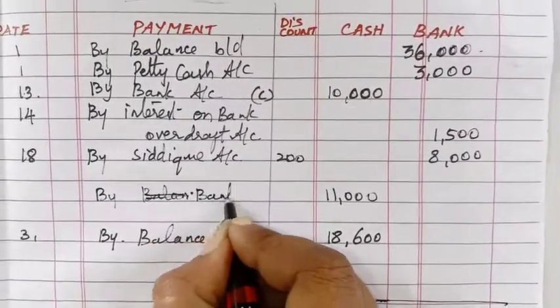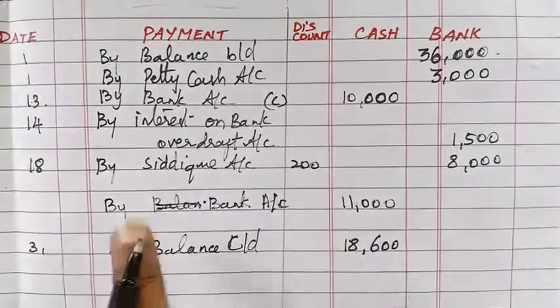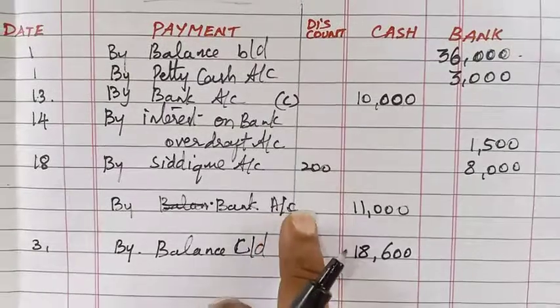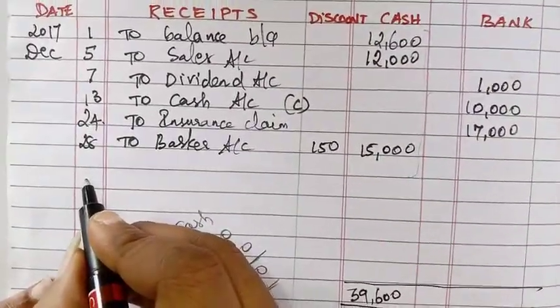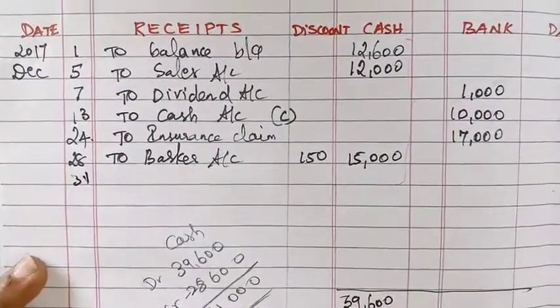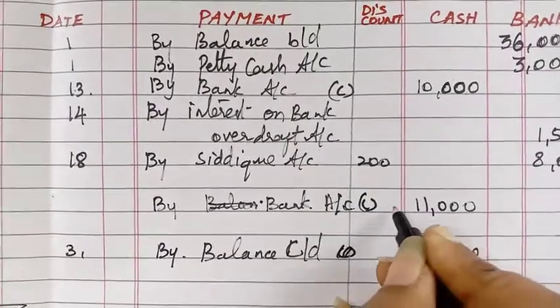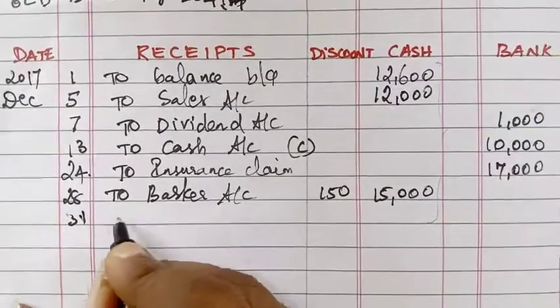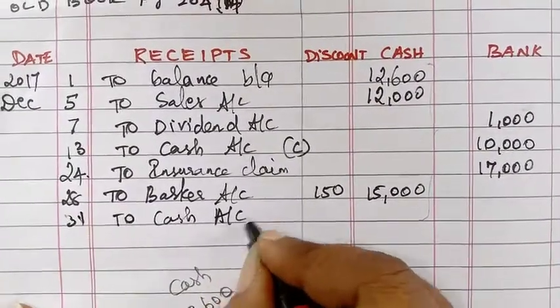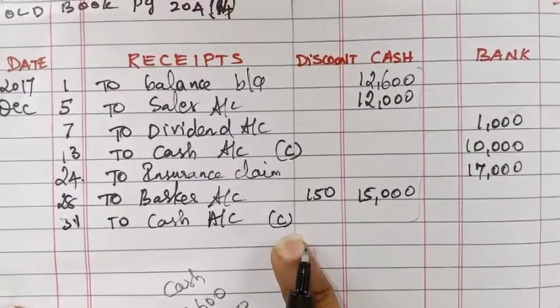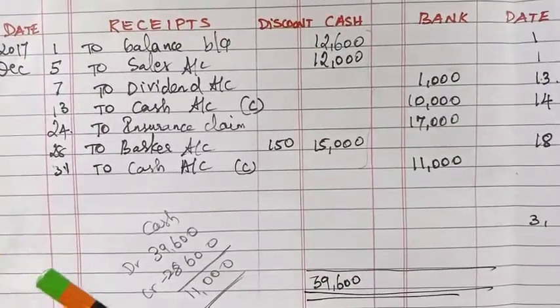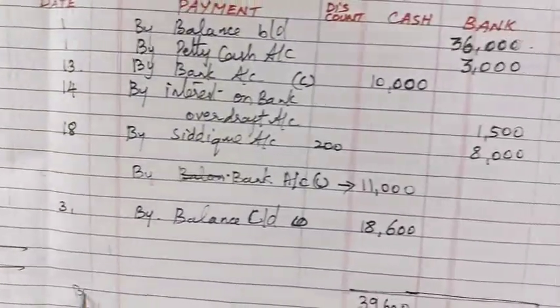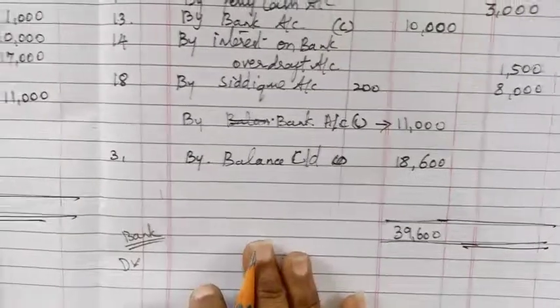Write 'By Bank Account' — this is a contra entry, so the same amount 11,000 must be written on the debit side also. Come to the debit side, write 31st date — this is a contra entry. Write 'To Cash Account', go to bank column and write 11,000. Now total the bank debit side fully — we get 39,000.